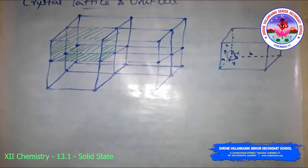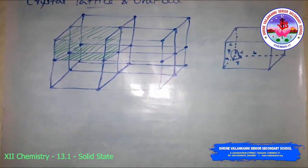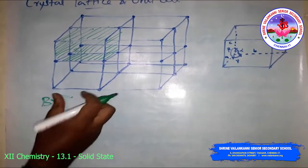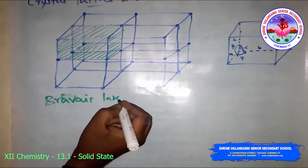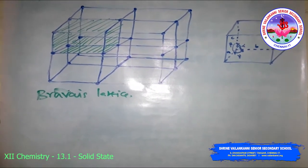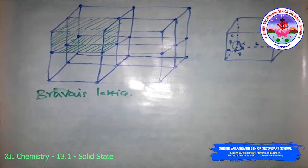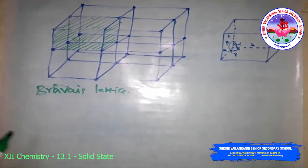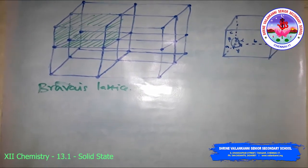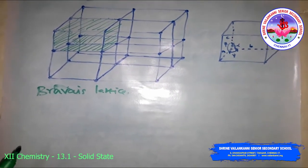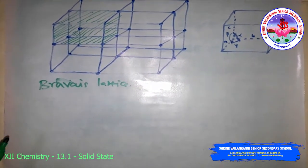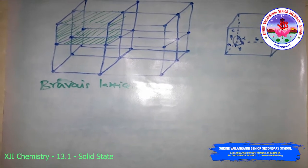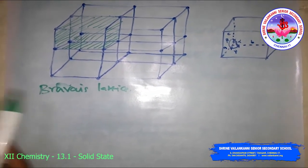There are 14 types of possible 3D lattices, called Bravais lattices. The characteristics of crystal lattices: each point in a lattice is called a lattice point or lattice site. Each point represents a constituent particle, which may be an atom, molecule, or group of ions. Lattice points are joined by straight lines to bring out the geometry of the lattice.